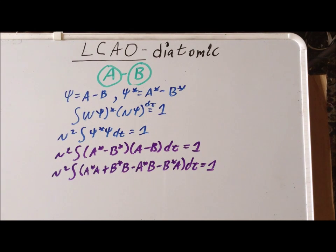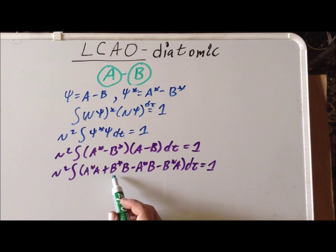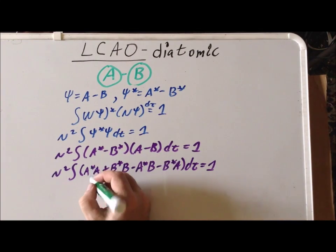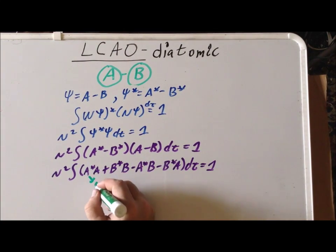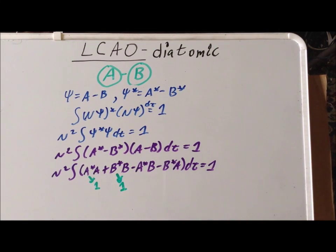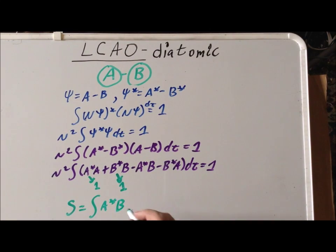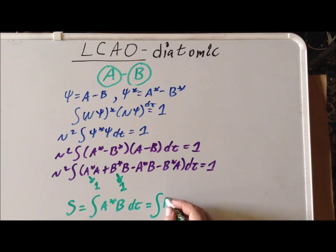For reasons explained in the previous video, we recall that a is a normalized atomic orbital and b is a normalized atomic orbital; therefore the integral of a-star·a d-tau is equal to 1, and the integral of b-star·b d-tau is also equal to 1. Then we define an integral which we call the overlap integral S, equal to the integral of a-star·b d-tau, which by symmetry is also equal to the integral of b-star·a d-tau.